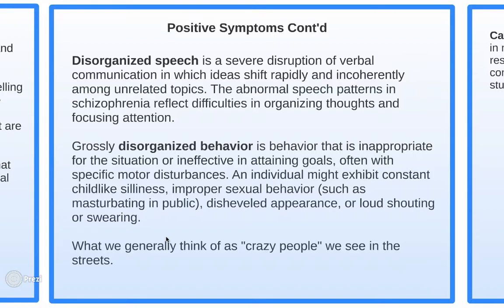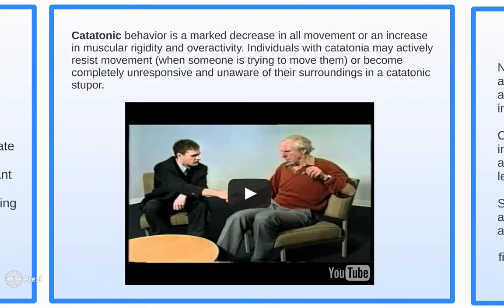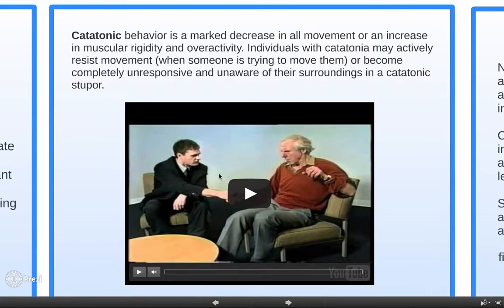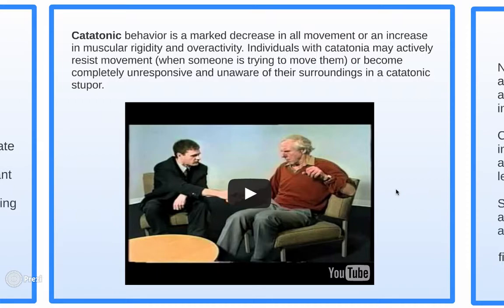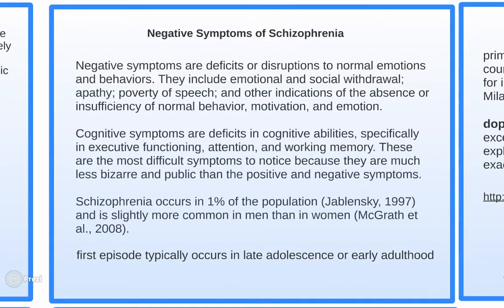Schizophrenia is what we generally think of as 'crazy people' — talking to themselves, swearing, yelling out of nowhere. Catatonic behavior is another positive symptom — a marked decrease in all movement and an increase in muscular rigidity and over-reactivity. Individuals with catatonia may actively resist movement or become completely unresponsive and unaware of their surroundings in a catatonic stupor. Many drugs also cause schizophrenia-like symptoms.